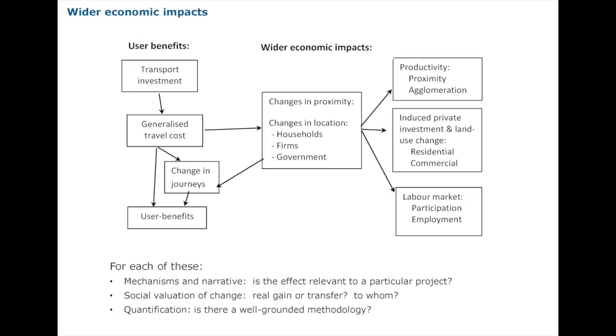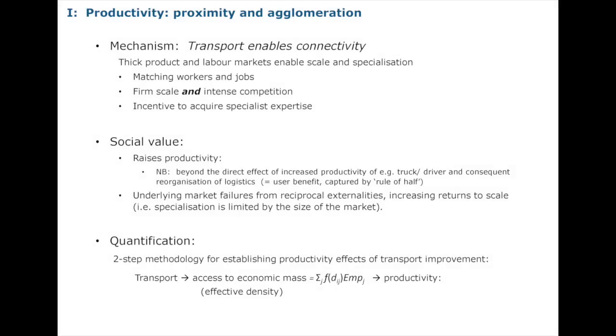Let me start with the first of those — just a couple of slides on productivity, proximity, and agglomeration. The mechanism: transport enables connectivity — it's really just Adam Smith. Scale and specialization is determined by the size of the market, and if transport effectively increases the size of the market, that's good for scale and specialization. That's the heart of it.